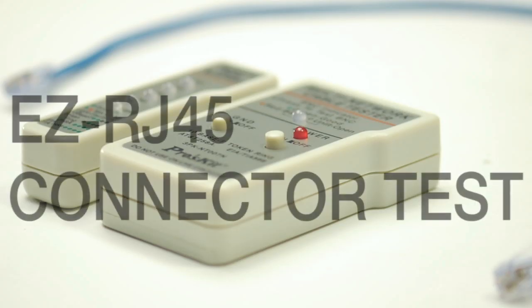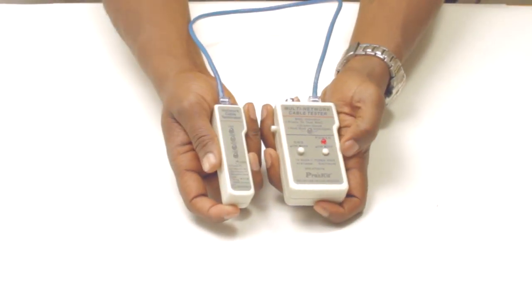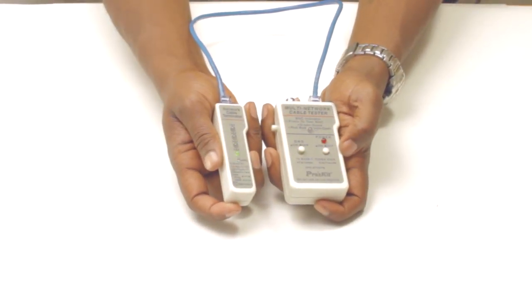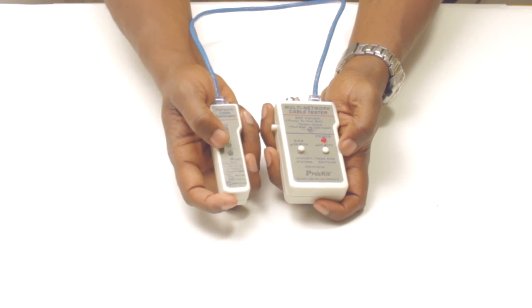The final step is to test the cable. Insert the RJ45 connector into the tester. Please note your tester might be slightly different. The green lights give us visual confirmation that we have fully and correctly assembled the cable.